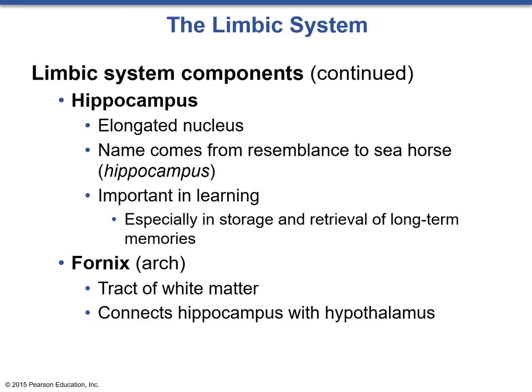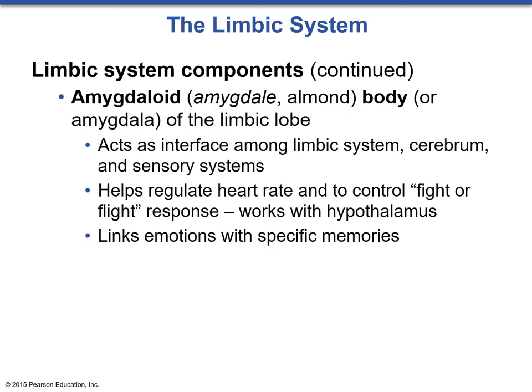Going through the components again: the hippocampus has an elongated nucleus and its name comes from its resemblance to a seahorse. It is important in learning and involved in the storage and retrieval of long-term memories. The fornix is simply the connecting white matter tract that connects the hippocampus with the hypothalamus. The amygdaloid body acts as an interface among the limbic system, cerebrum, and sensory systems — it helps regulate heart rate, controls the fight-or-flight response, and links emotions with specific memories in conjunction with the hypothalamus.